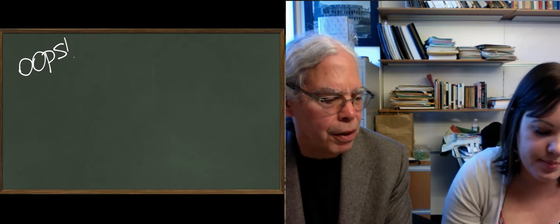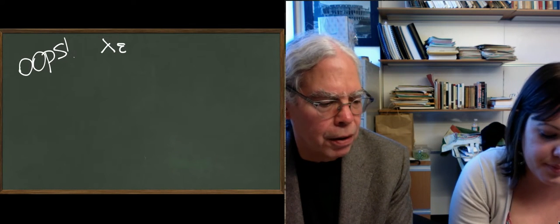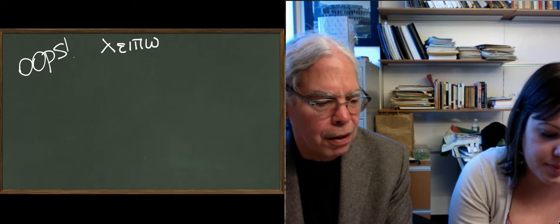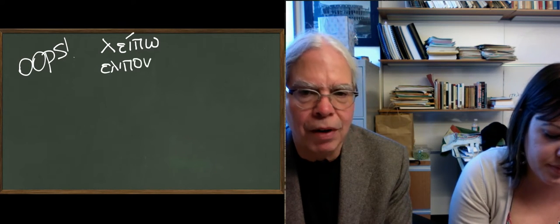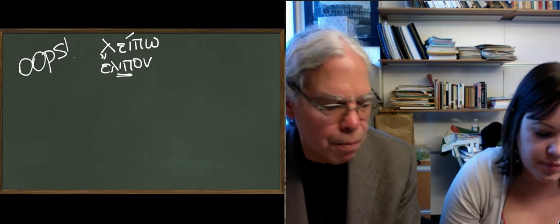One second aorist verb, which is leipo, and you'll remember that its second aorist is elepon, that's the third principle part. The aorist is elepon, where we change the stem vowel from an e - l-e-i-p becomes l-i-p.